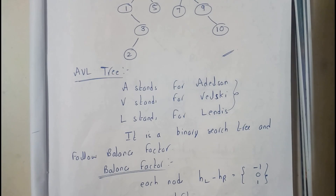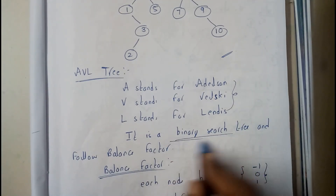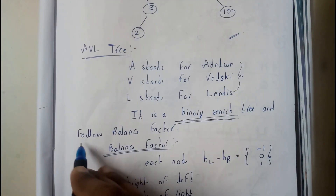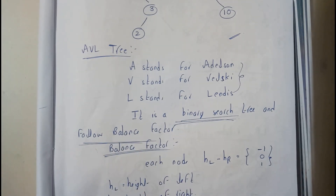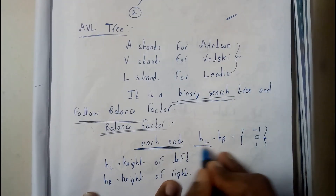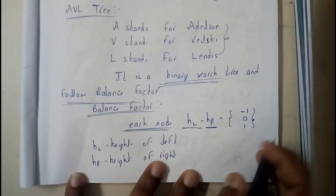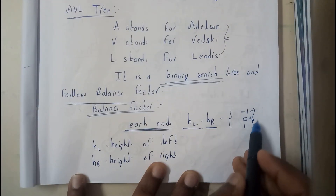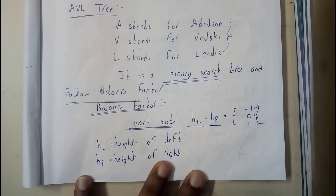You need to remember their names. AVL tree is nothing but a binary search tree, and it also follows the balance factor. The balance factor is nothing but at each and every node, height of the left subtree minus height of the right subtree should be minus one, zero, or one. HL is nothing but height of left and HR is nothing but height of right.